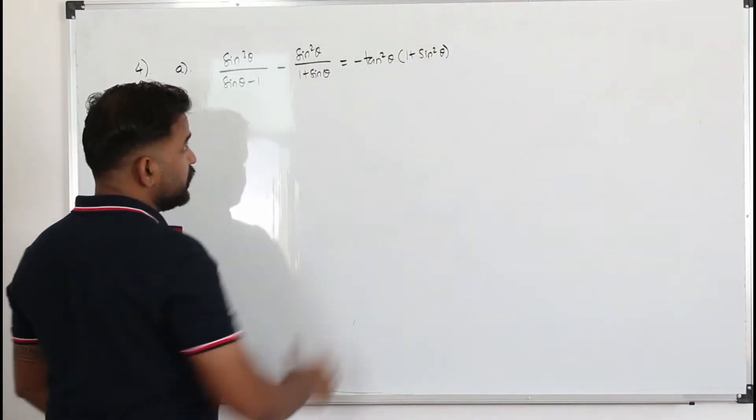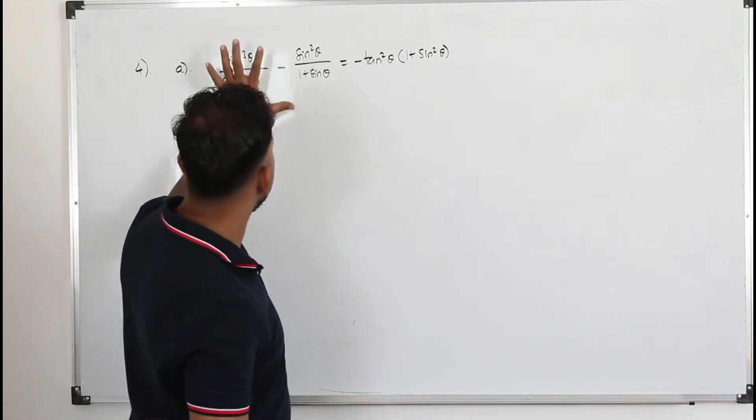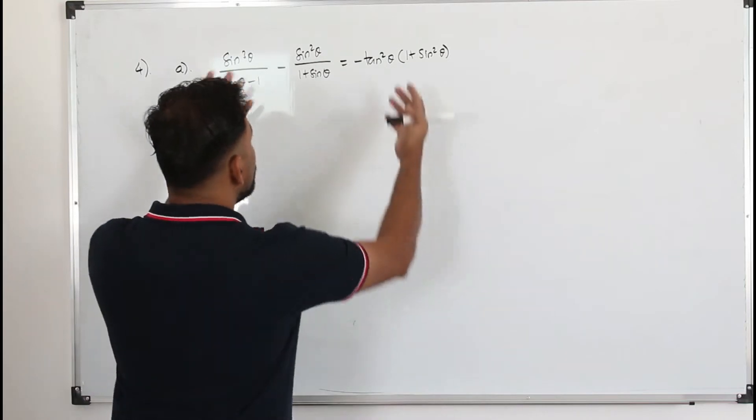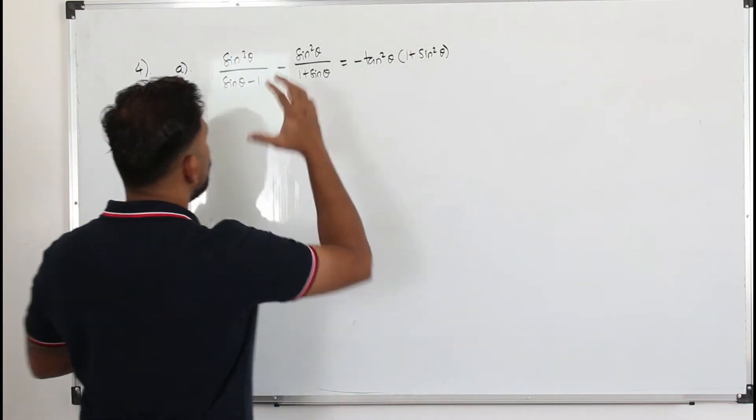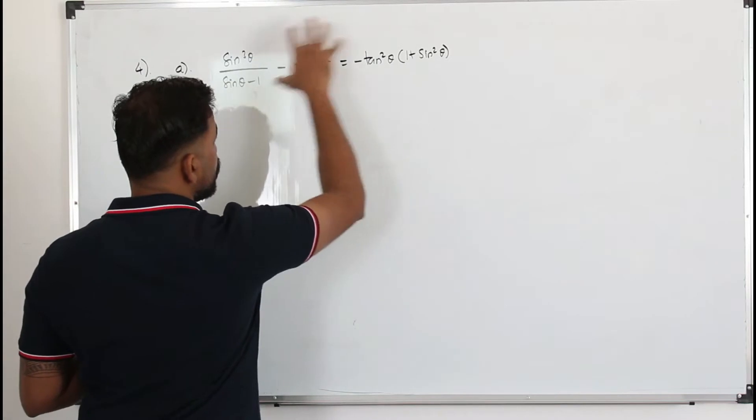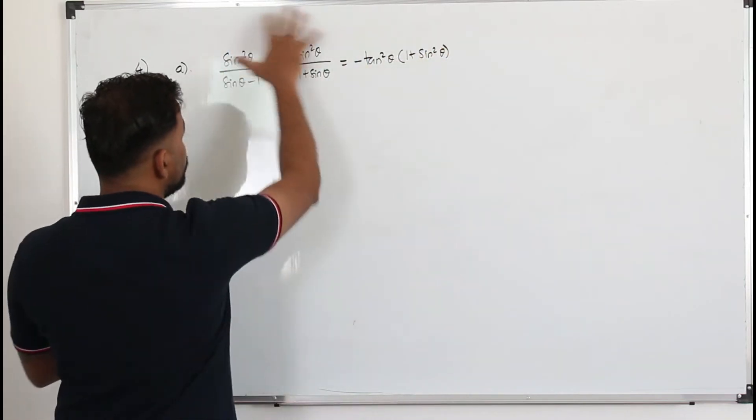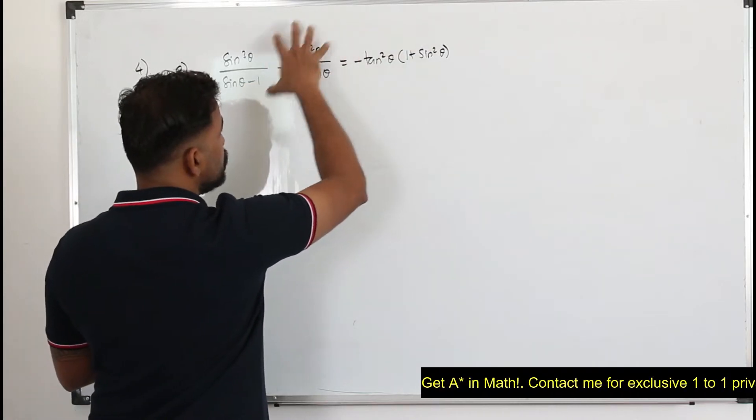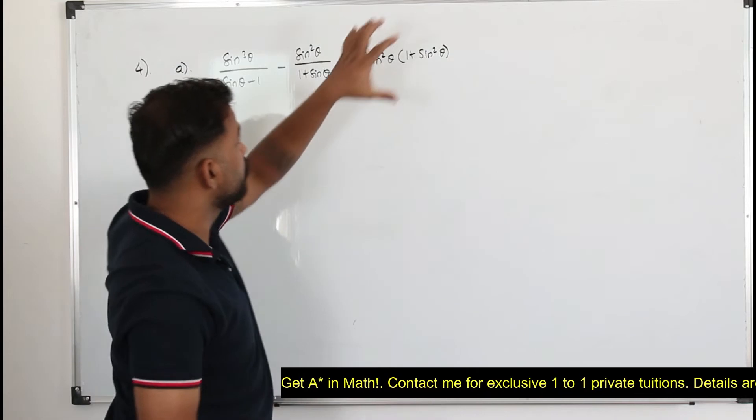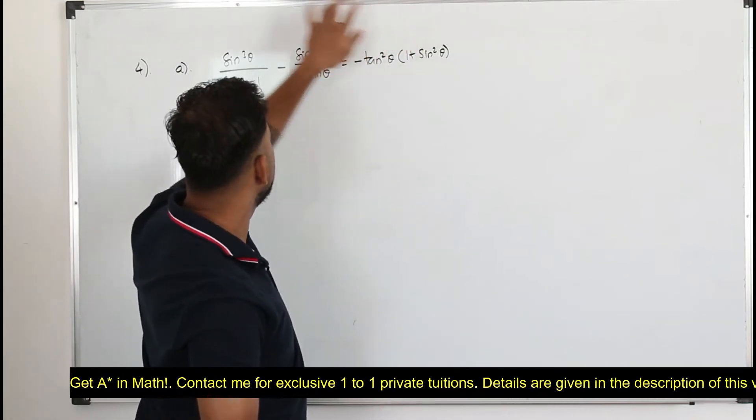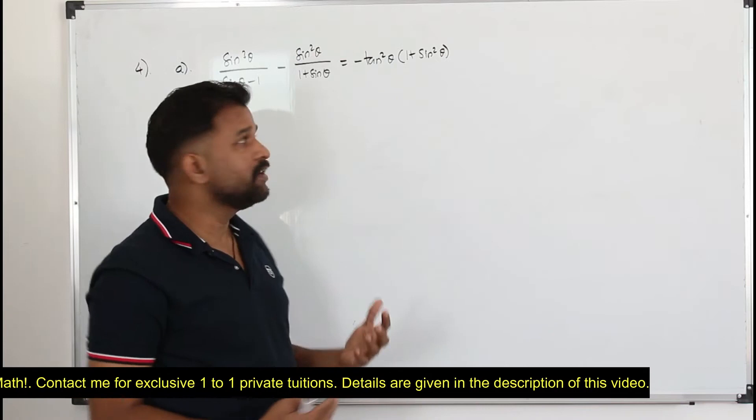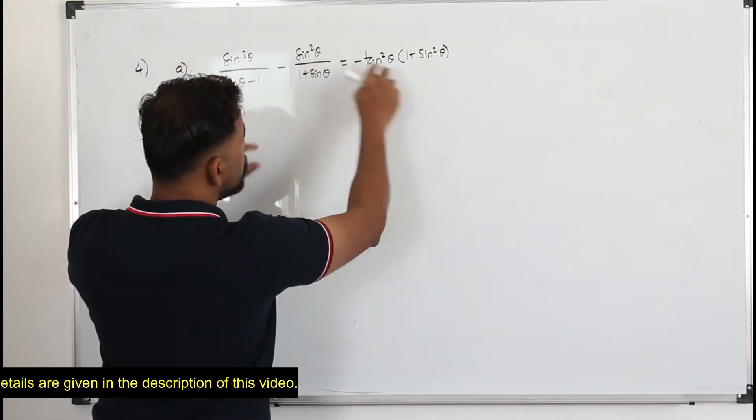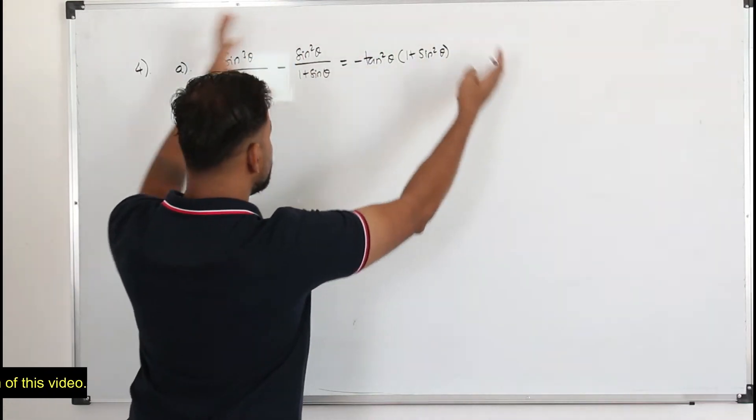Whenever the question asks you to prove something like this, what you are not supposed to do, you cannot take the whole equation because they want you to prove this is equal to this. So you can either start from the left hand side and try to prove that this is equal to this, or you can start from right hand side and prove that this can be written in this form. Usually we take a side which has more terms. It's easier to simplify the terms and get to this rather than taking this and expanding it.